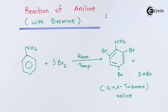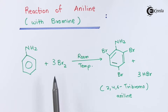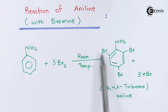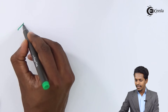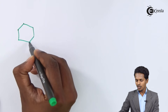But suppose we need a mono-halogen derivative. In this case we cannot use bromine directly at room temperature, as we would get a tri-halogen derivative. To obtain a mono-halogen derivative, we need to use a different approach, which I will explain now. We know that the NH₂ group in aniline is a very strong activating group.